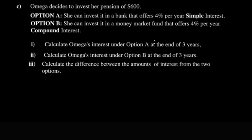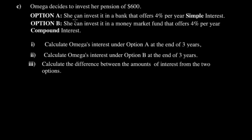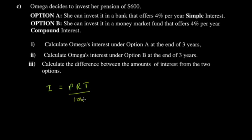Calculate the interest under option A at the end of three years. You're told that somebody invests a pension of $600, and she can invest in a bank that offers four percent simple interest per year. The simple interest formula from primary school is: Principal × Rate × Time ÷ 100%.